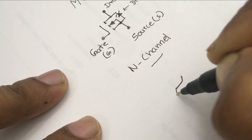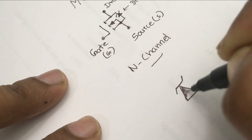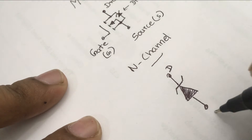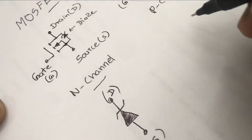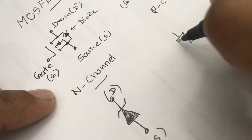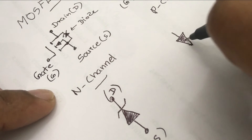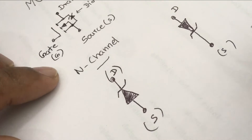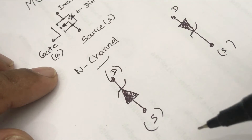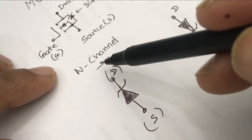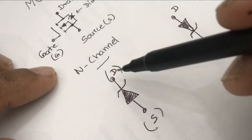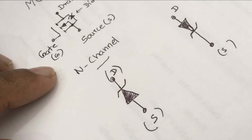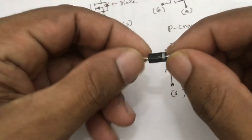After the short description, shall we move to the testing part. I hope you have seen that there is a diode connected to source and drain. Except the direction, the diode is there with N-channel as well as P-channel MOSFETs. You can check the source and drain pins the same way we check a diode.